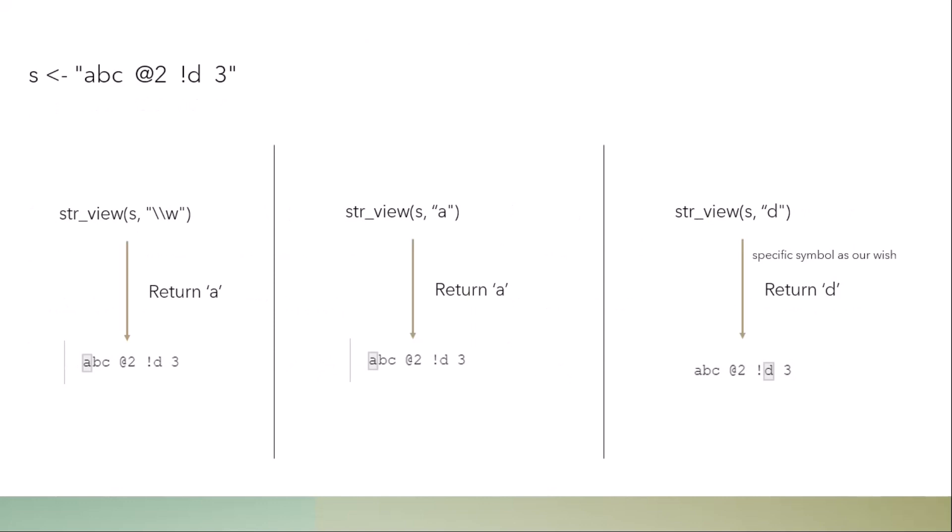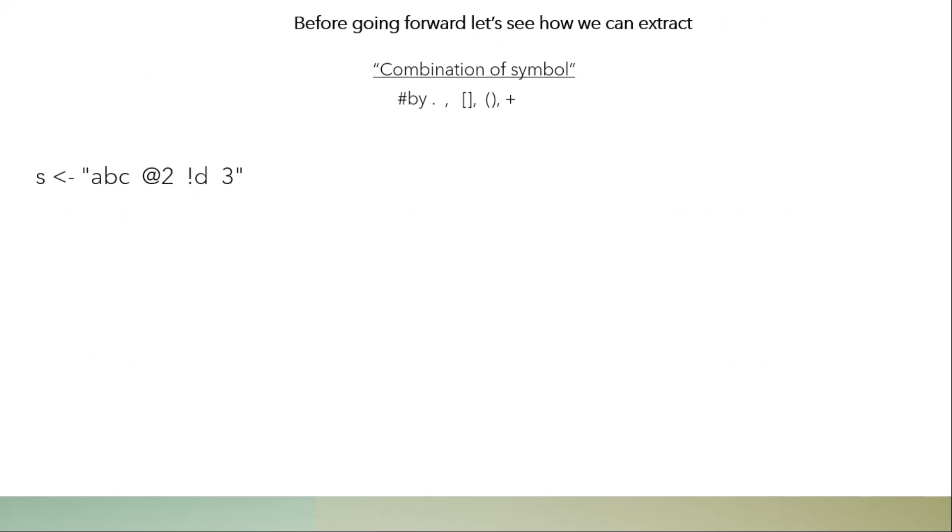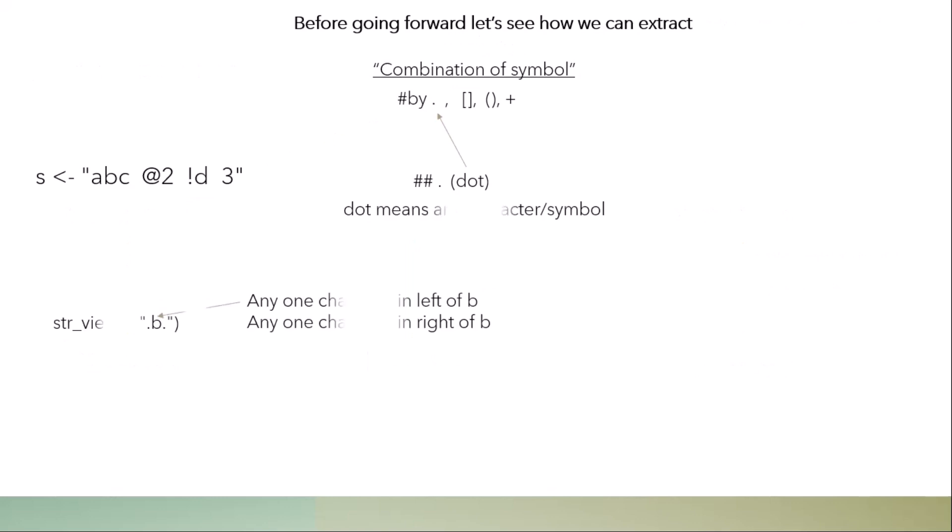Now let's see how we can extract a combination of symbols. We can extract combinations using dot, close bracket, and plus. I will discuss parentheses in the future, but in this video I will only cover three things: dot, close bracket, and plus.